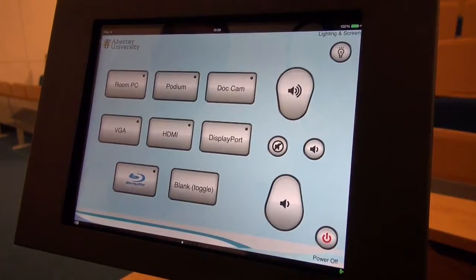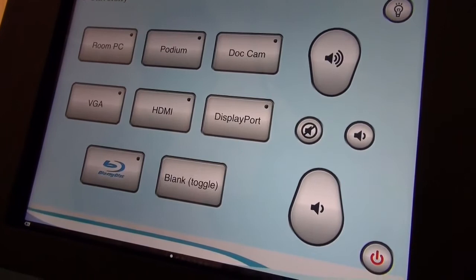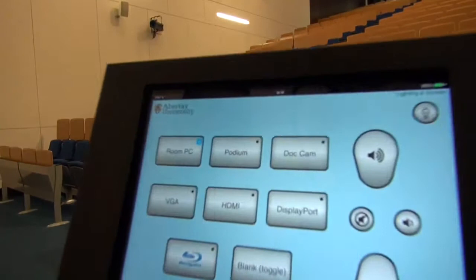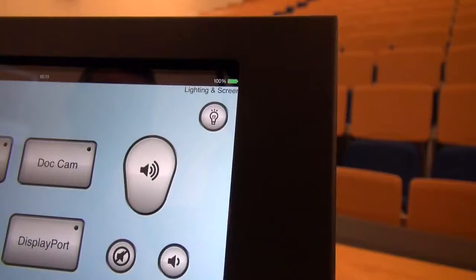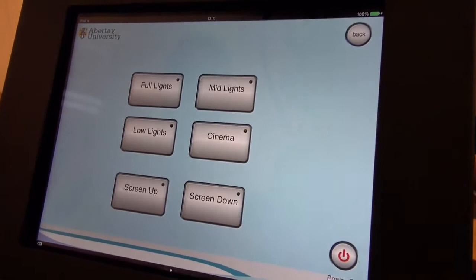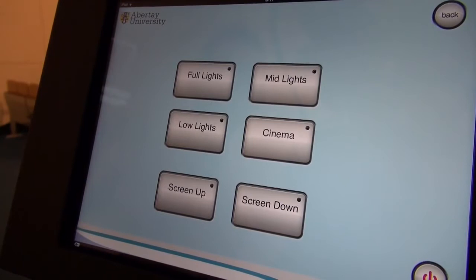Looking closer at the touch panel layout you can see that we've got various virtual push buttons on the panel. We've got the room PC, the podium, document camera, VGA, HDMI, display port and the panel will give you some feedback as to which button you've pressed. There's a little glowing light in the corner of this icon that gives you that feedback and confidence that you've selected that device. We have the ability to embed other controls in touch panel control. In this room we have this button that enables us to change the lighting in the room and also take the screen up or down manually by the press of a button.